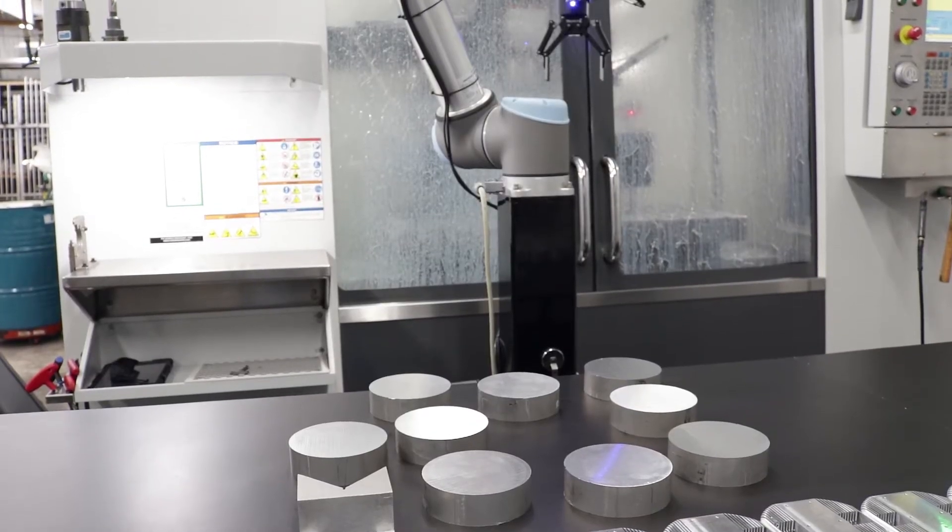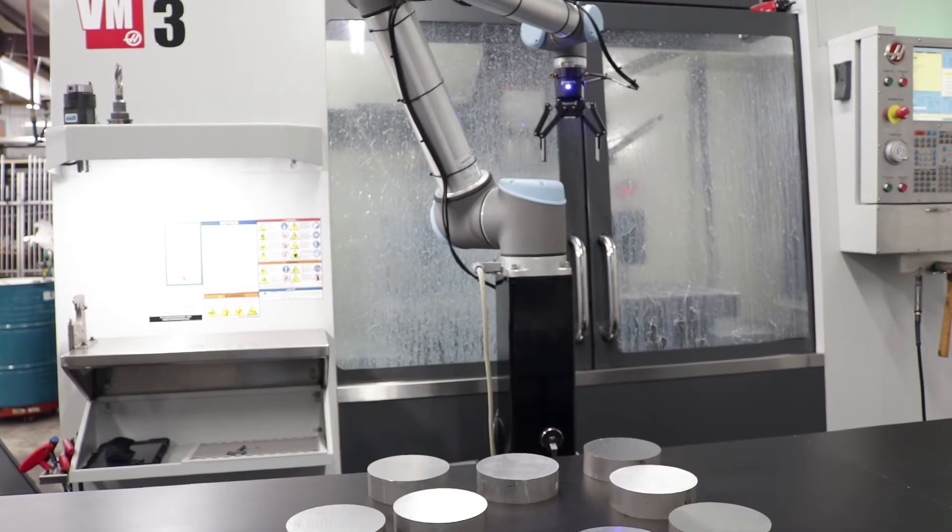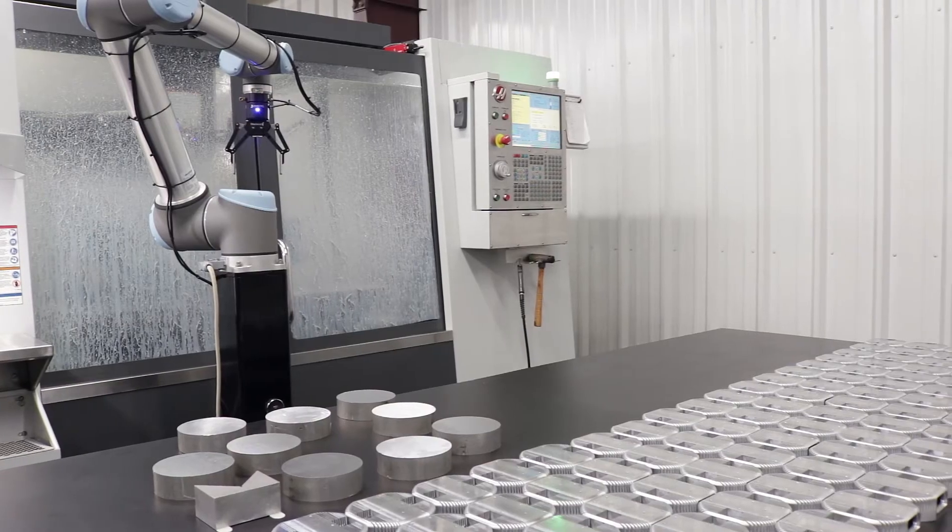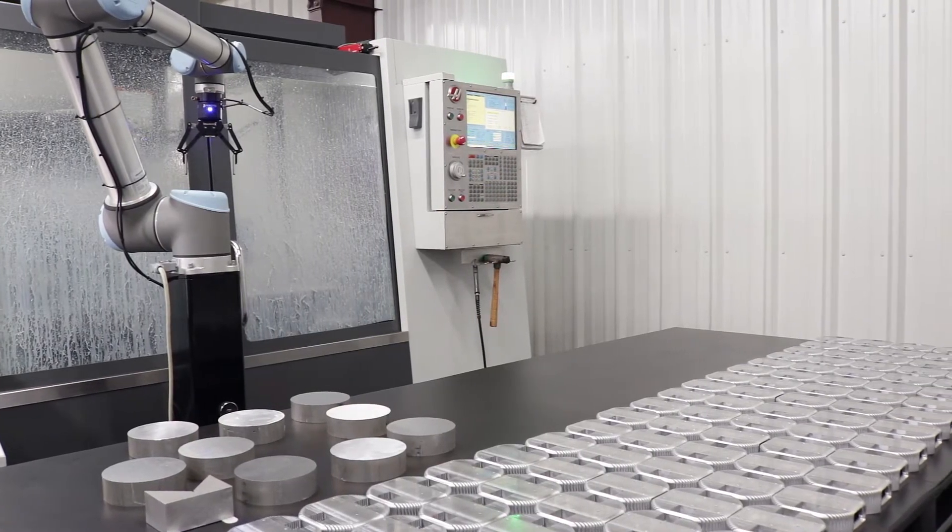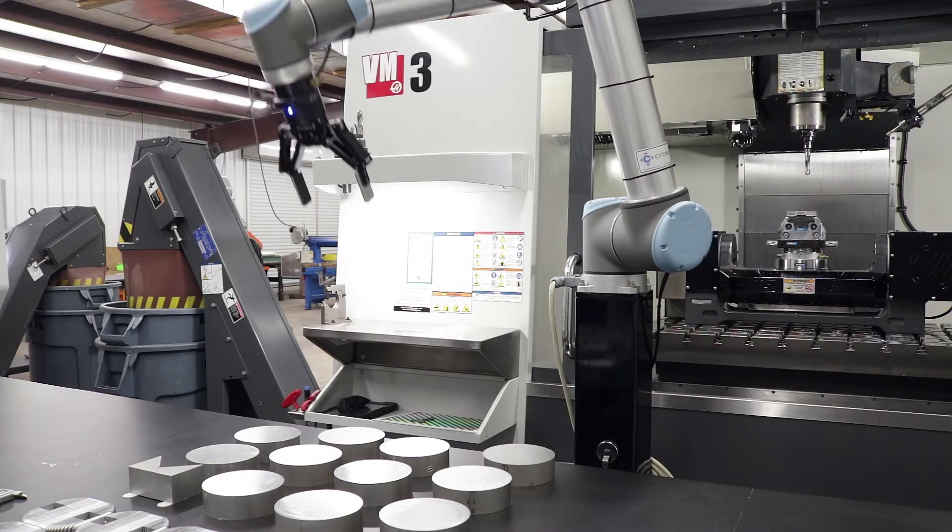We're just going to take and put maybe 15 or 17 parts just kind of strewn out where we think the field of view is. The camera, or the robot's going to rotate and look over the table, take one snapshot and see all the parts.